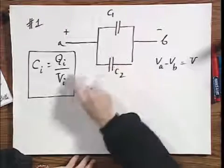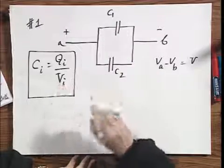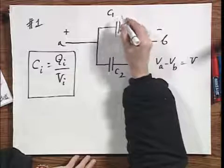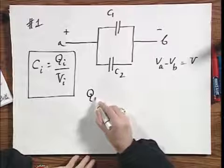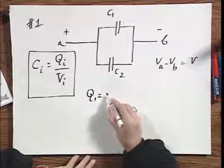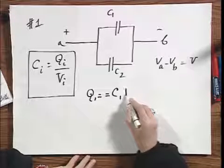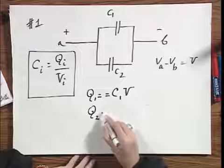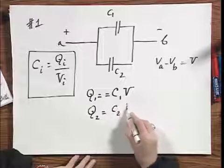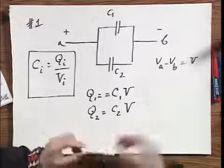Now both capacitors see the same voltage over them. So therefore, the Q of one equals C of one times V, and Q of two equals C of two times V.